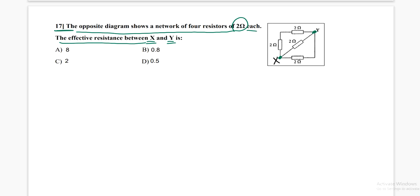Notice here, I'm going to use different colors. Notice that this resistance and this resistance are connected in series because they are on the same line. So the equivalent for these two is two plus two equals four ohms.